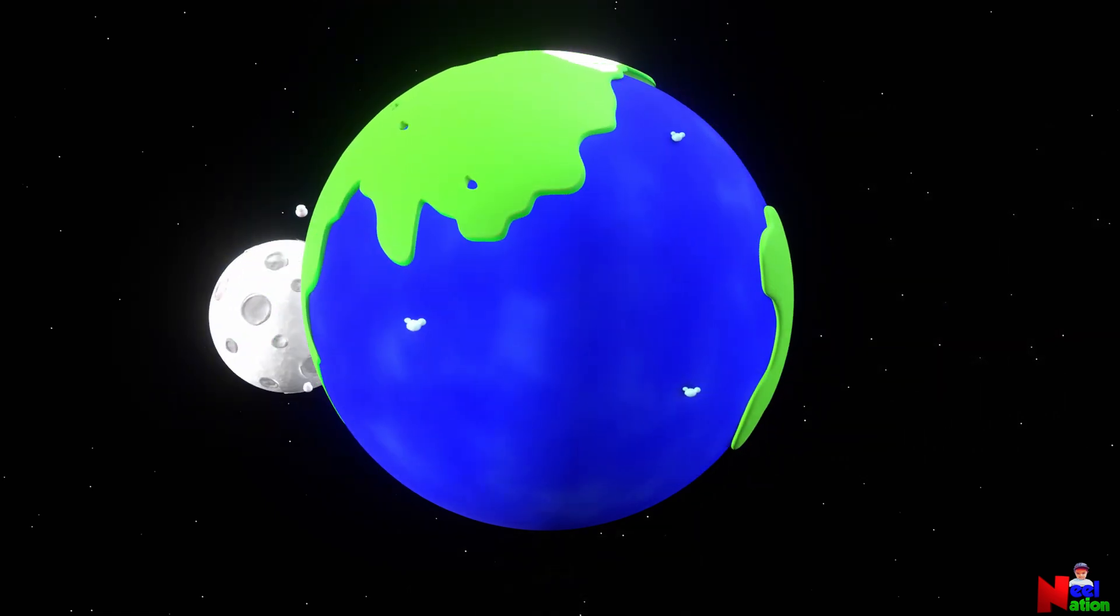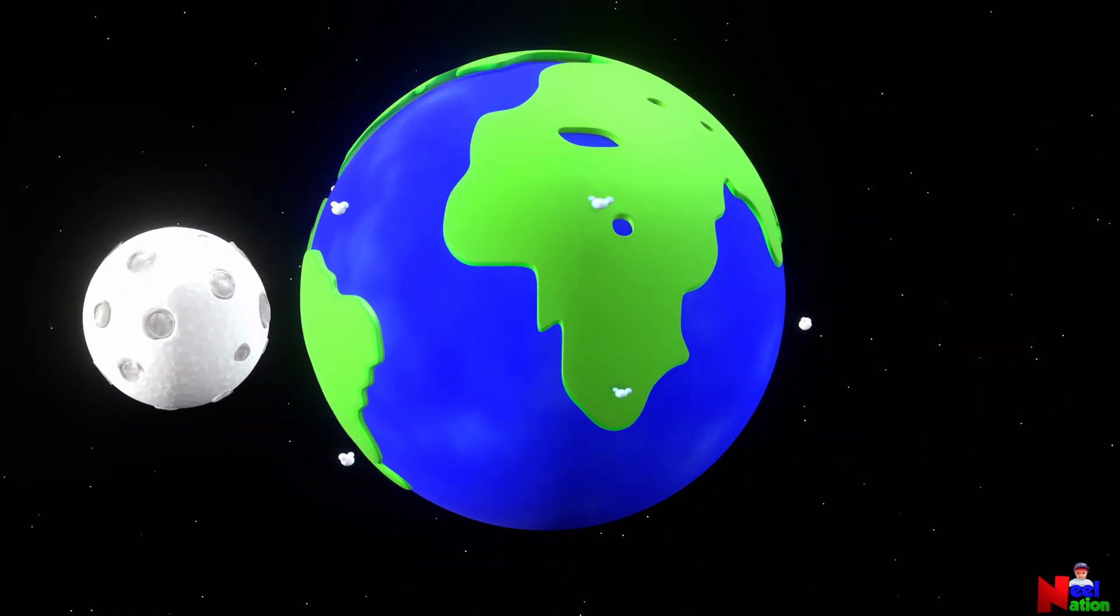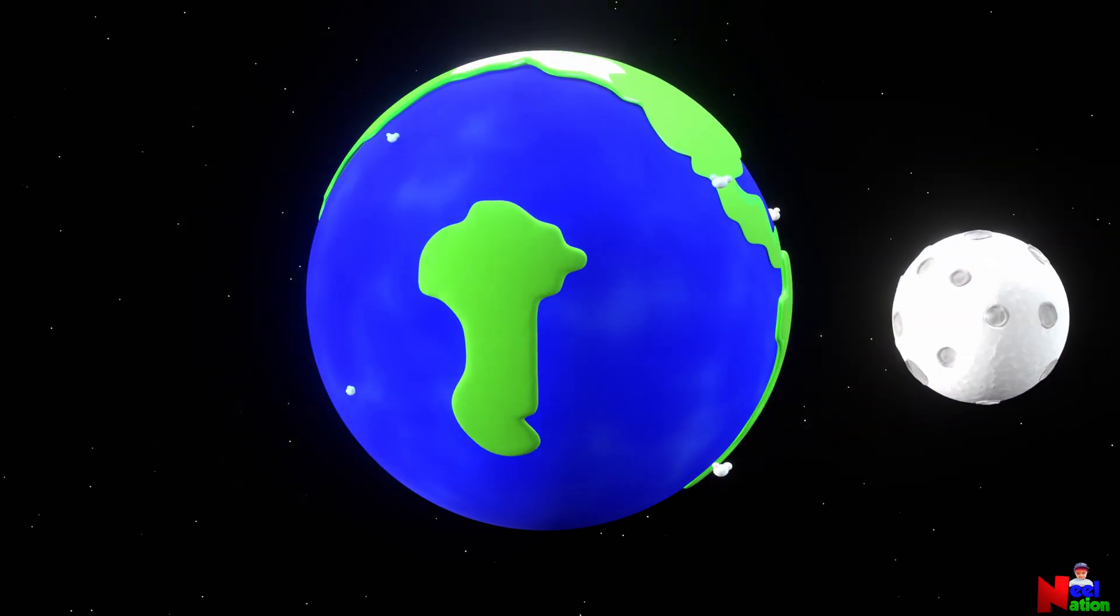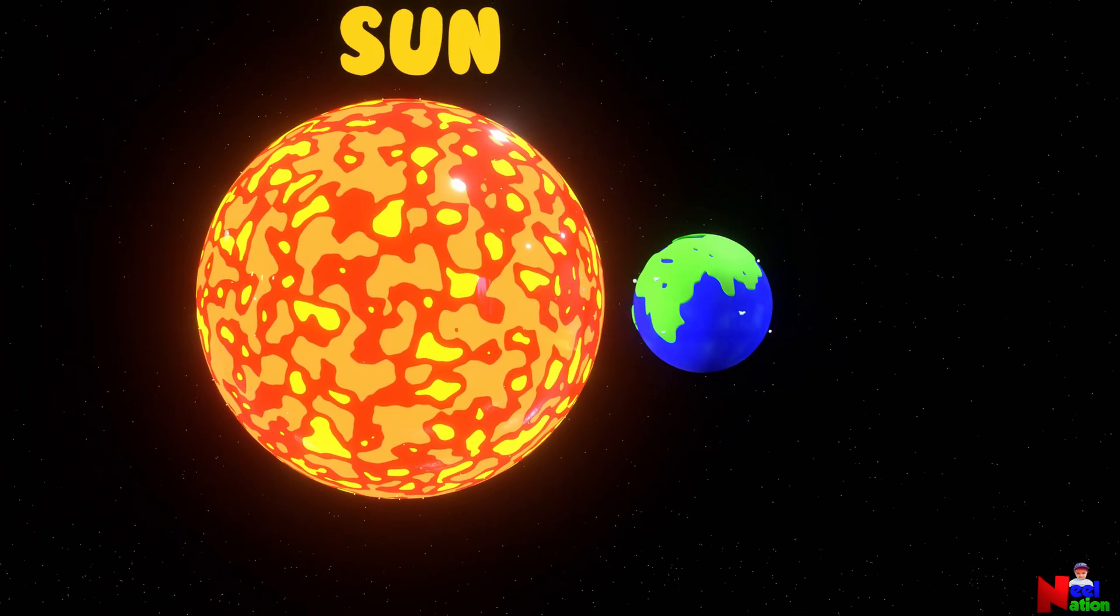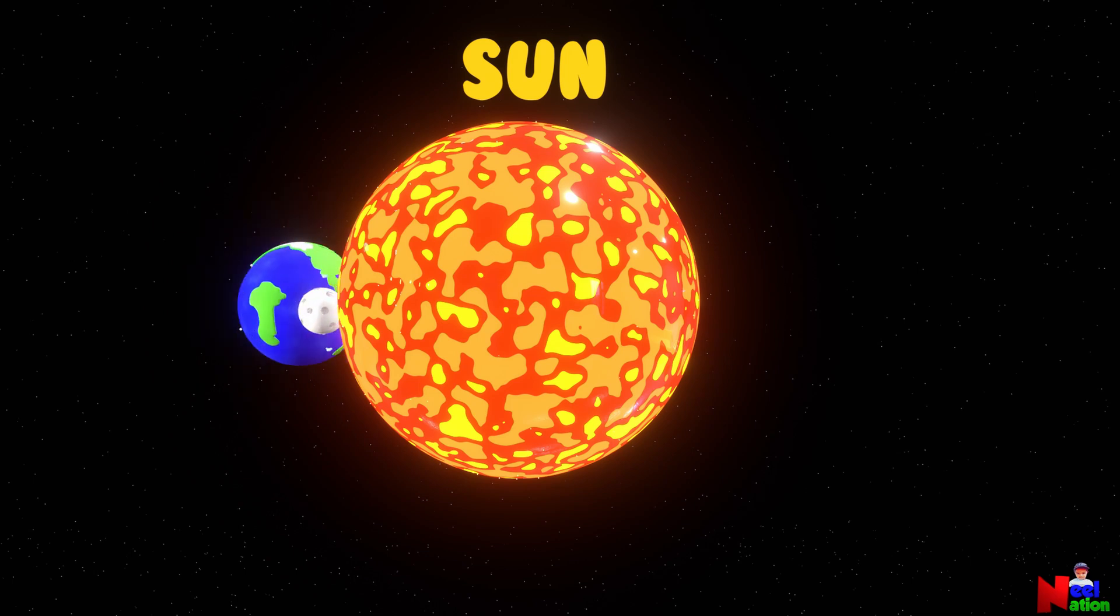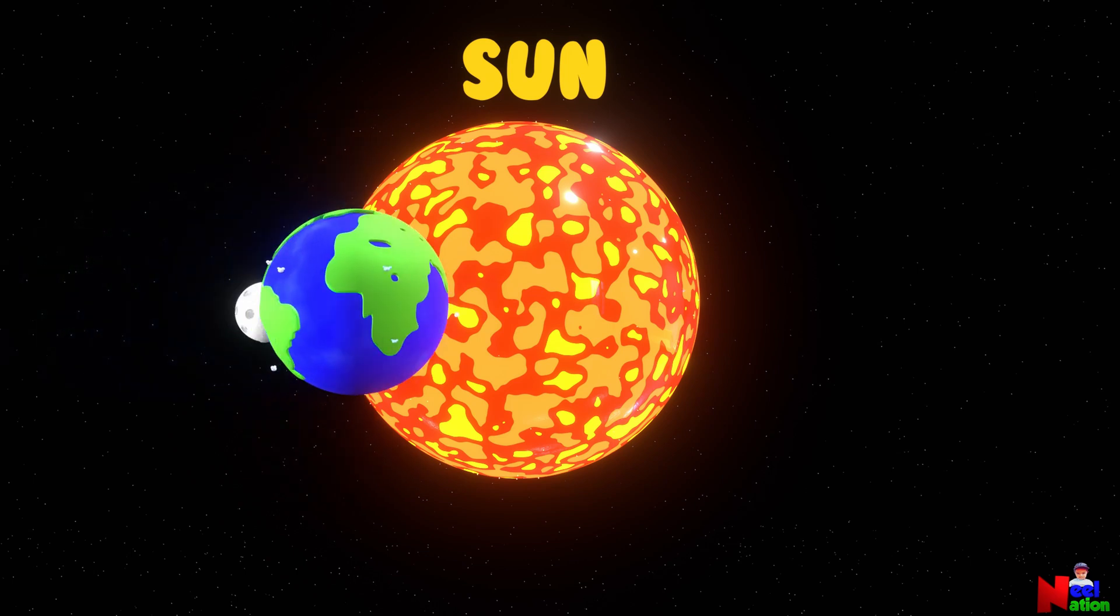In fact, it is the Earth's only natural satellite. The moon goes around Earth every 27 days and in turn, the Earth travels around the sun.